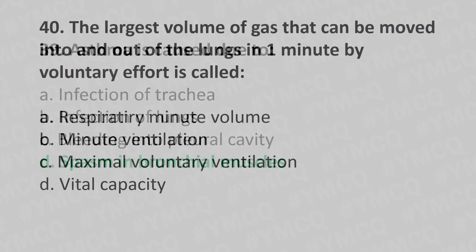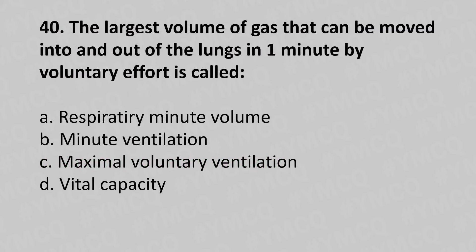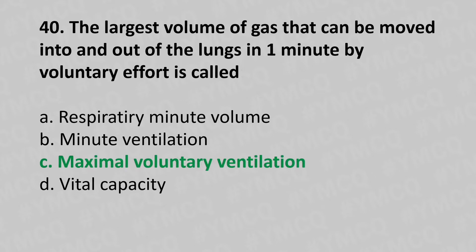Now let's move to question number 40. The large volume of gas that can be moved into and out of the lungs in one minute by voluntary effort is called. Option A: Respiratory minute volume. Option B: Minute ventilation. Option C: Maximal voluntary ventilation. Option D: Vital capacity. And the answer is Option C, Maximal voluntary ventilation.